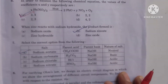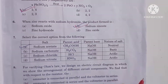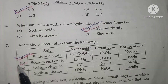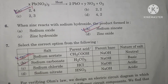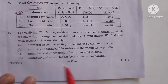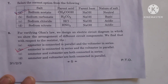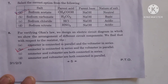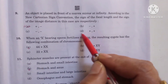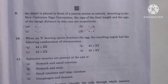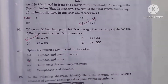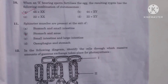In question number 6, B is the correct option. In question number 7, also B option is the correct option. In question number 8, B option is the correct option. Question number 9, D is the correct option. Question number 10, A option is the correct option.